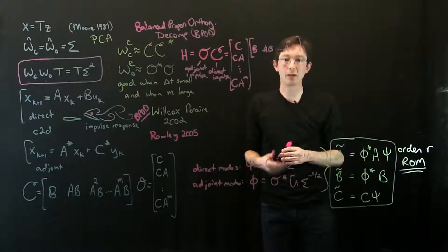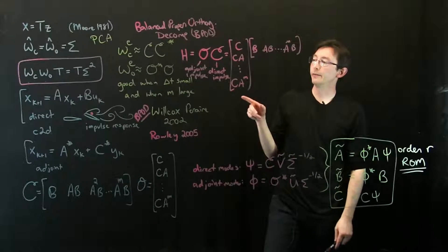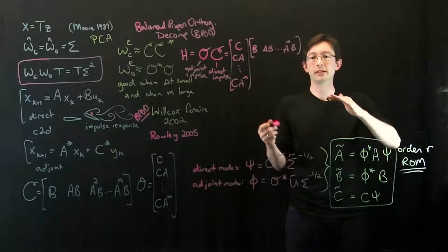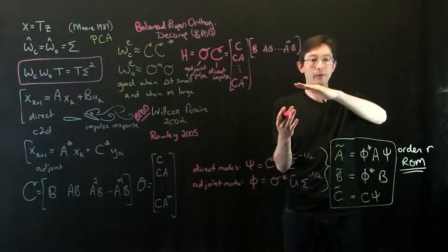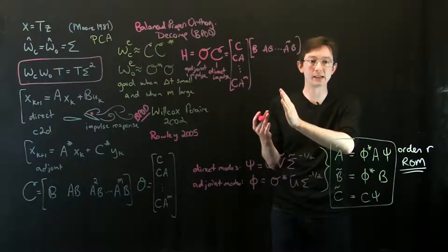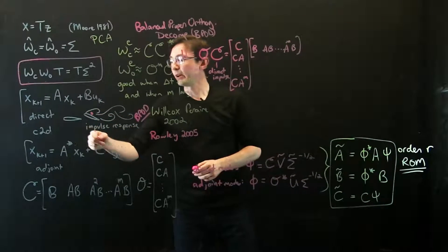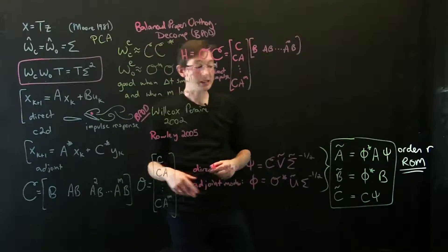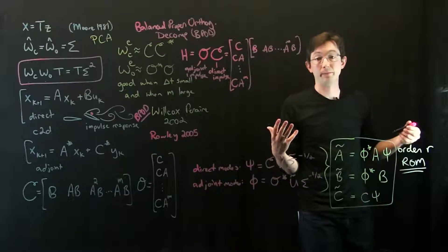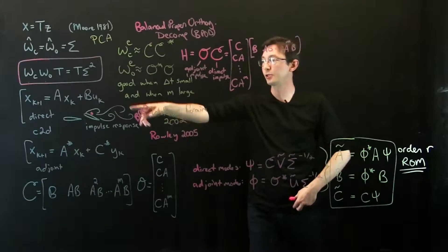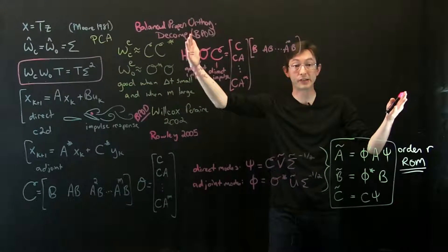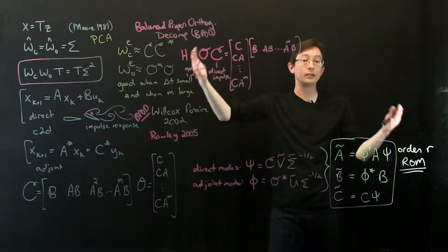But the central problem here is the number of actuators, the dimension of U, is usually small. In my airfoil example, maybe I can do a couple things to pitch the airfoil, I've got one or two control knobs. But in a lot of systems my measurements might be exceedingly high dimensional. I might have the luxury in my simulation of measuring the full state X, I can measure a million things.